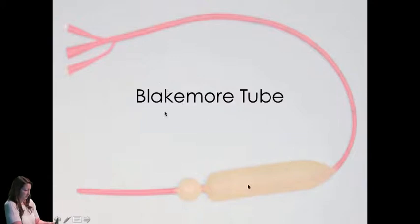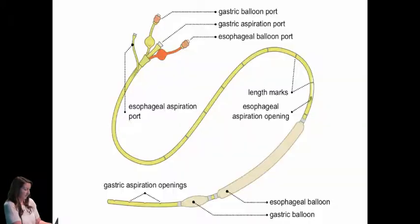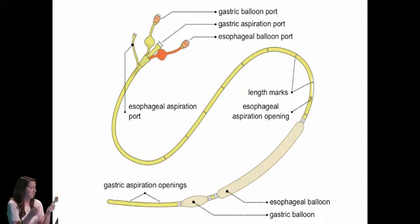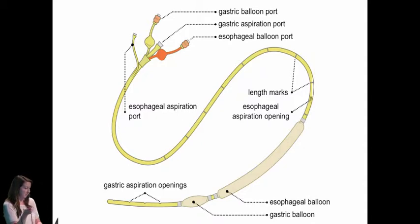But they are life-saving, so hopefully we never have to use one. They can be inserted nasally or orally, and usually these patients are already intubated before you attempt this. There are typically four ports on the end — a balloon port and aspiration port for both the stomach and esophagus, though ours has just two. You use both the esophageal and gastric balloon for aspirating and inflating with air.